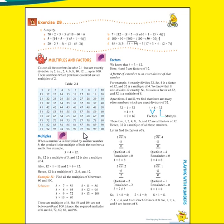Now, the definition of multiples: when a number A is multiplied by another number B, the product is the multiple of both the numbers A and B.